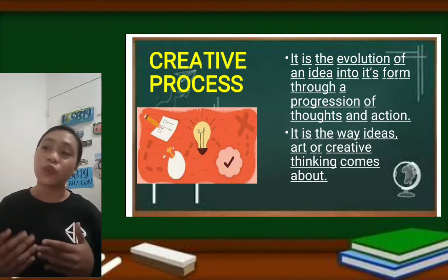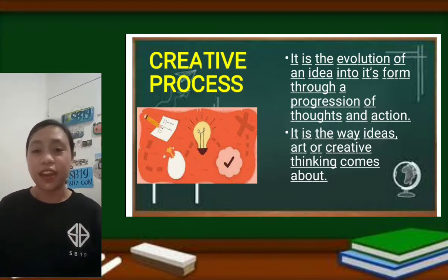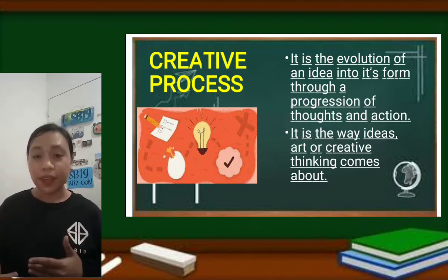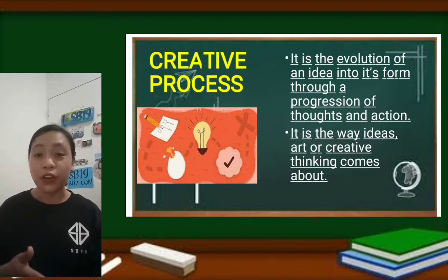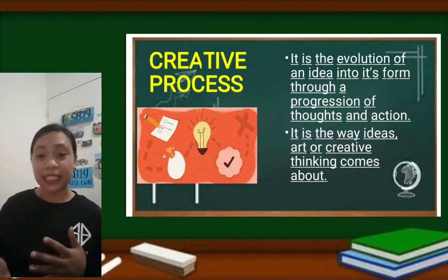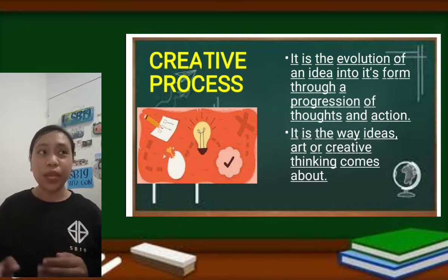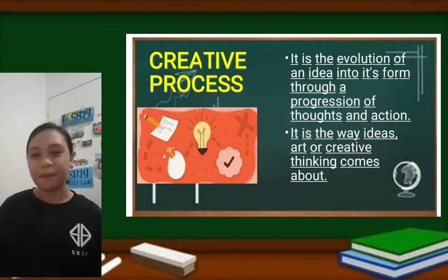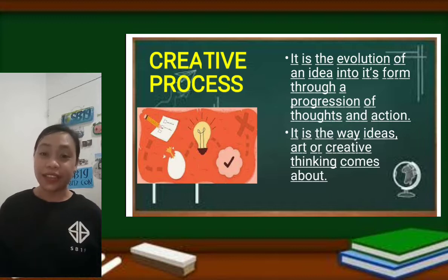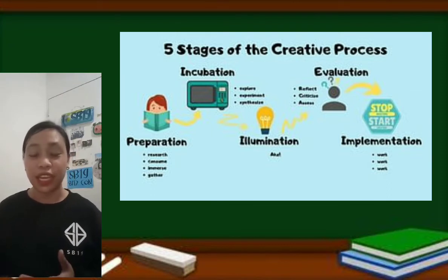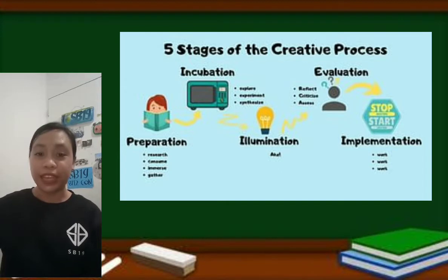The creative process is the evolution of an idea into its form through a progression of thoughts and actions — essentially the stages of making original art through ideas drawn from inspiration from other people or phenomena. We expect the creative process to result in art. It is the way ideas, art, or creative thinking comes about, and it has five stages. Here are some examples we already know.